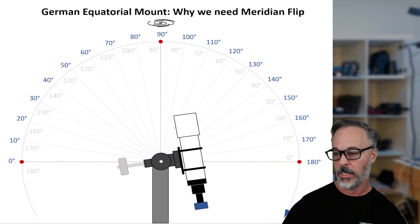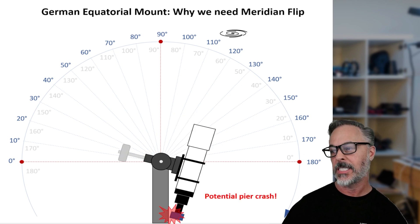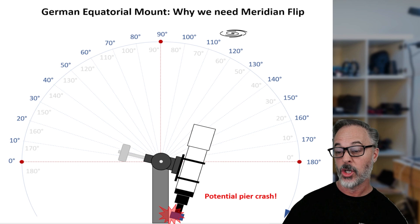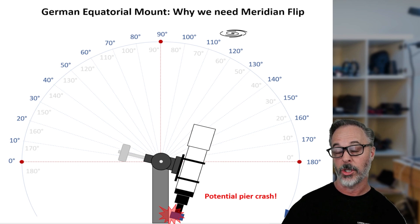And even at the meridian, everything seems to look pretty good, but at some point past this, we risk a potential pier crash where the camera at the bottom of your telescope is going to hit either the pier or the tripod. And of course, we don't want that to happen.